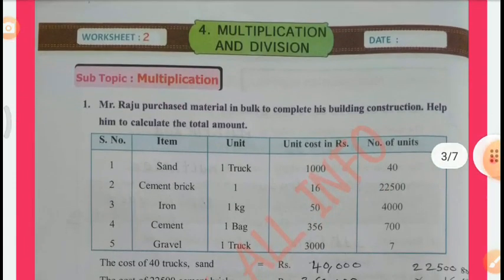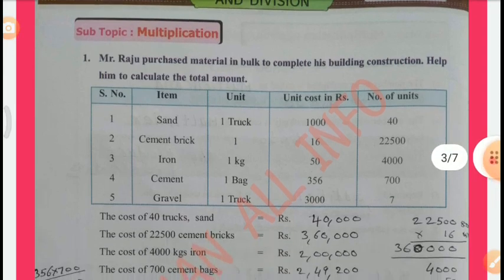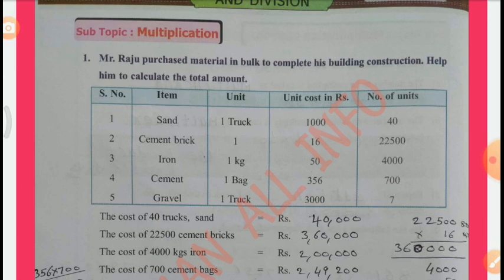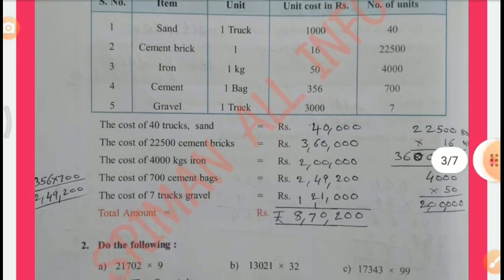Worksheet 2, Subtopic: Multiplication. Mr. Raju purchased material in bulk to complete his building construction. Help him to calculate the total amount. Items: Sand — 1 truck, unit cost Rs. 1,000, number of units 40. Cement Brick — 1 unit, cost Rs. 16, number of units 22,500. Iron — 1 kg, Rs. 50, number of units 4,000. Cement — 1 bag, Rs. 356, number of units 700. Gravel — 1 truck, Rs. 3,000, number of units 7.